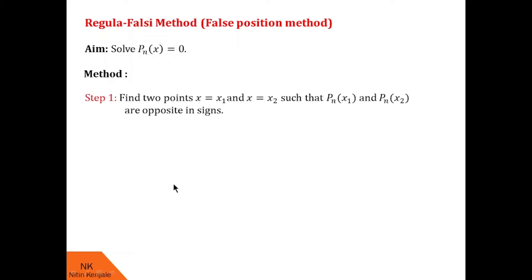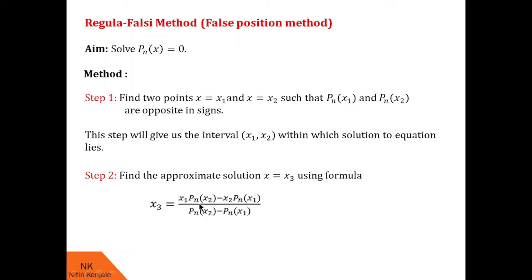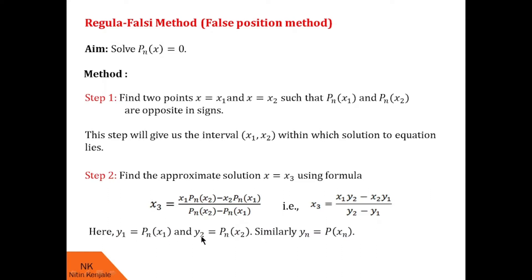The aim of this method is to solve an algebraic or transcendental equation f(x) = 0. Step 1: find any two points x1 and x2 such that f(x1) and f(x2) are opposite in sign, telling us the solution lies in the interval [x1, x2]. Step 2: find the next approximate solution x3 using the formula x3 = (x1·f(x2) − x2·f(x1)) / (f(x2) − f(x1)), which can also be written as (x1·y2 − x2·y1) / (y2 − y1), where y1 = f(x1) and y2 = f(x2).